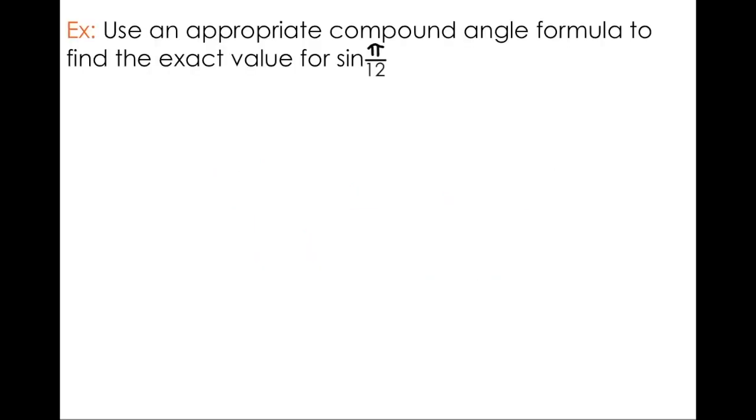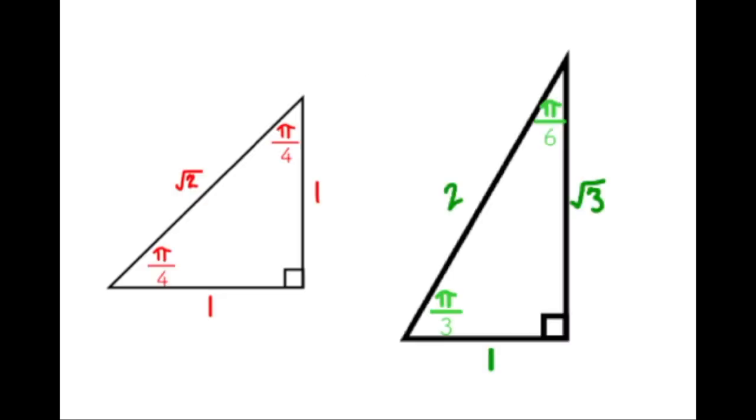For example, if I wanted to determine the exact value for the sine of pi over 12, all I really need to do is find two angles that either add or subtract to get pi over 12. If those two angles are special angles, I should have no problem finding an exact value.